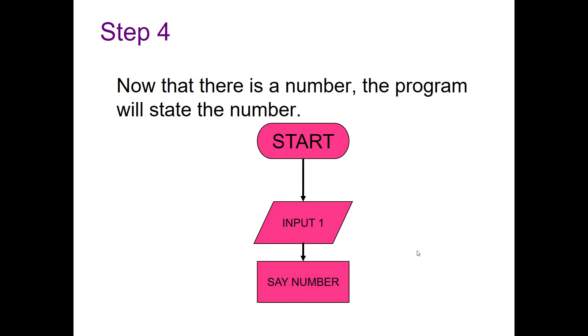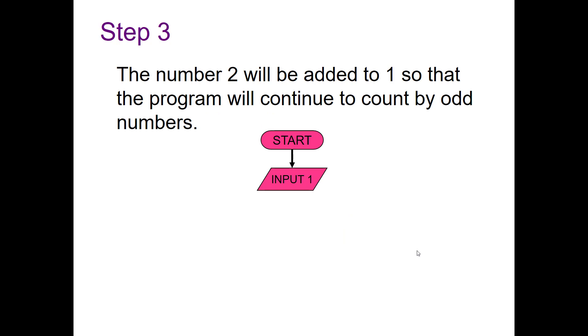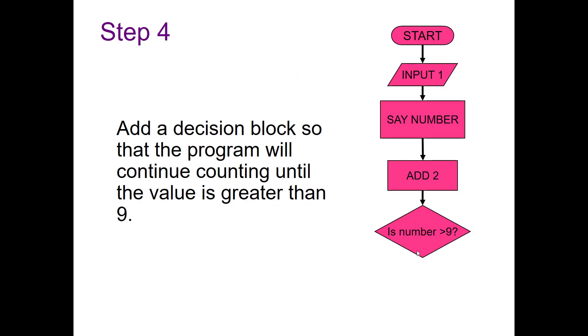The number two will be added to one so that the program will continue to count by odd numbers only. So start, input one, say the number, add two. Then we're going to add a decision block to our program so that we can tell if the number is greater than nine.